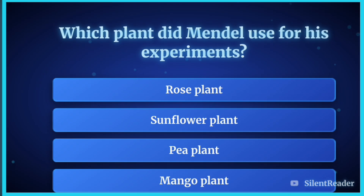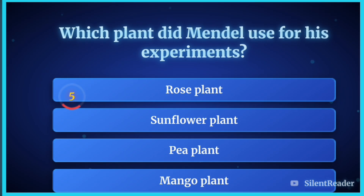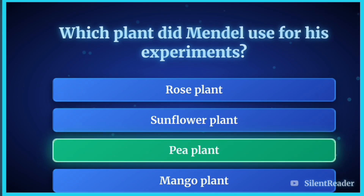Which plant did Mendel use for his experiments? The correct answer is the pea plant.